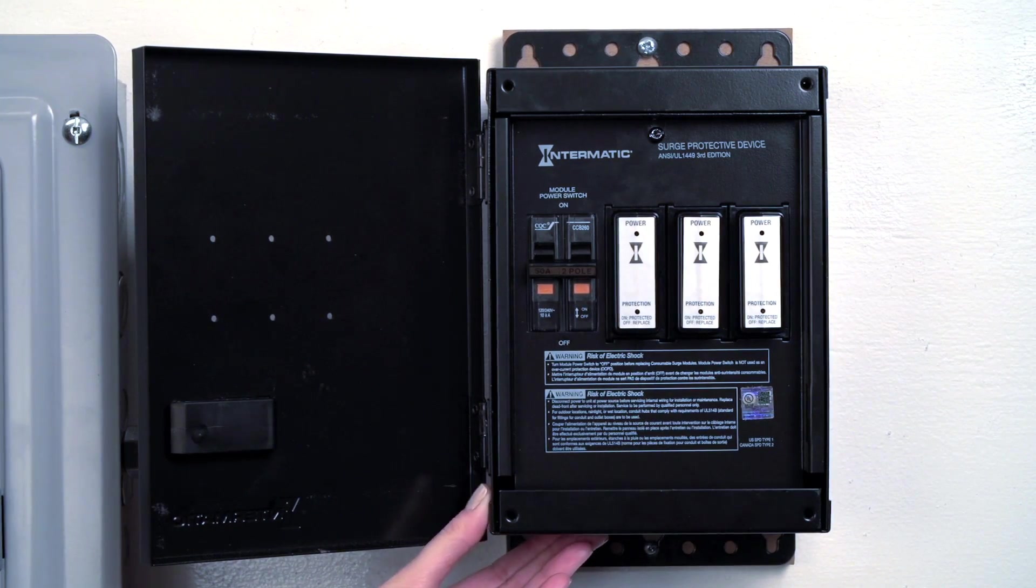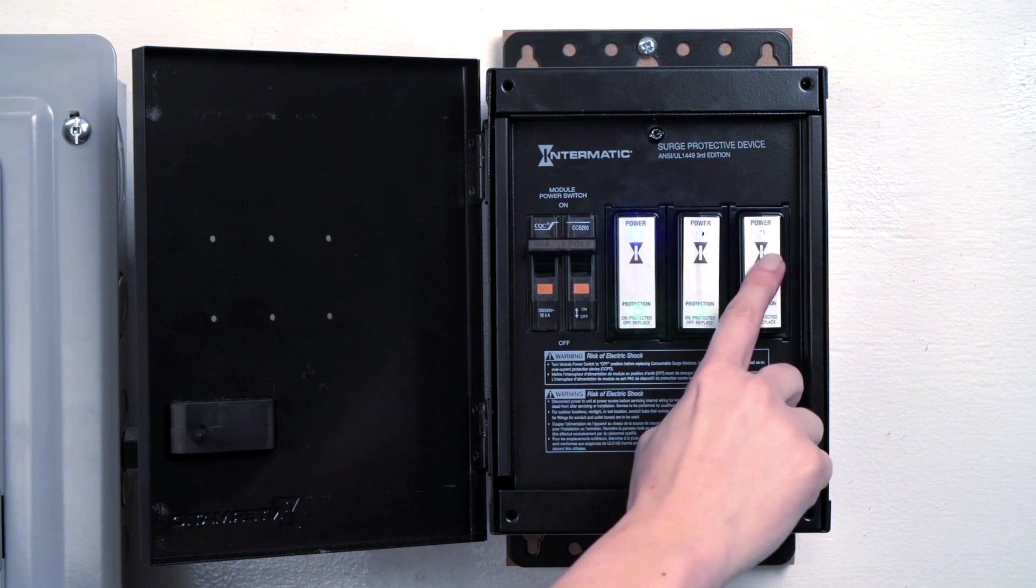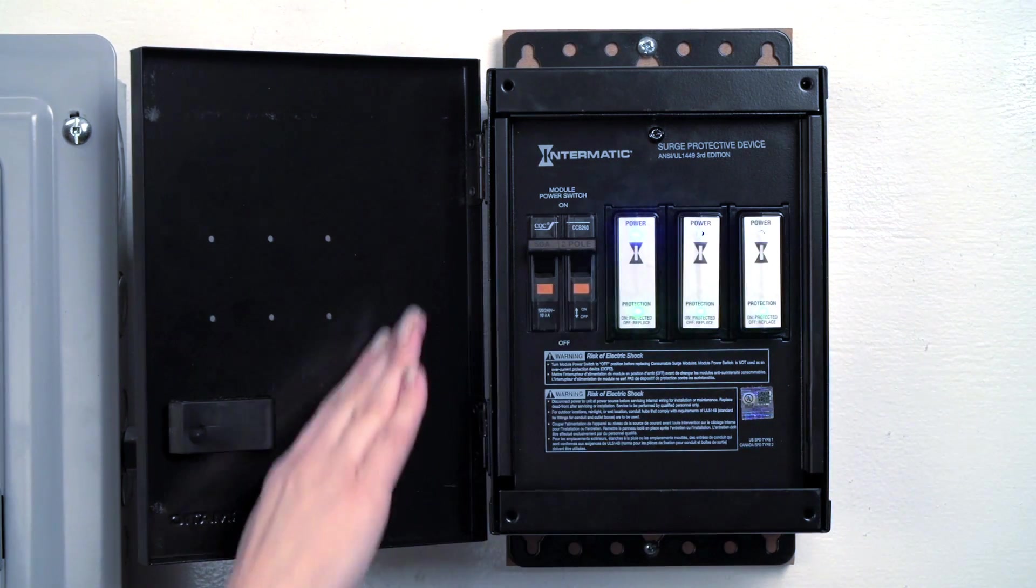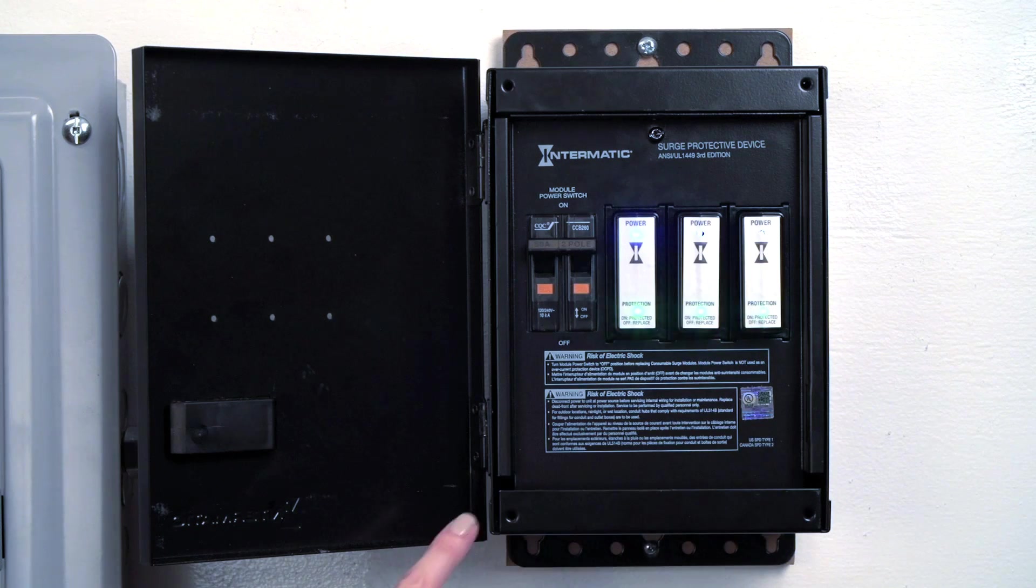Once it's fully seated, turn the power back on. The blue LED indicators show that power is now going to the unit. The green LED indicators now show that your home is protected from surges.